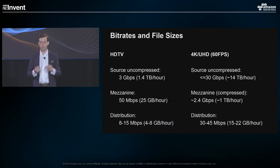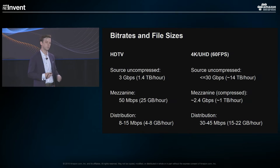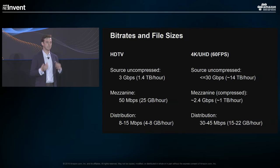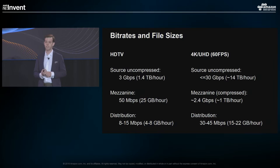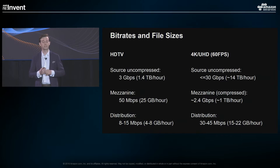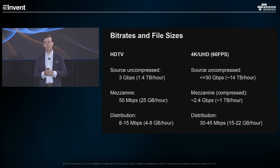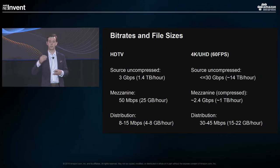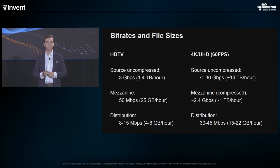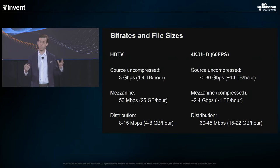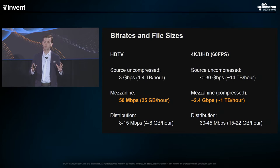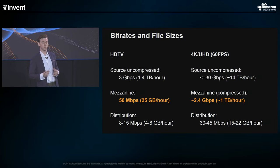To look at this from a like-for-like comparison, the source is what you edit with in a studio — the highest quality content you'll ever have to deal with. For HD 1080p, this is about 3 gigabits per second — big, but not terrifying. You downsample that into a mezzanine format, which is the highest quality we deal with on a day-to-day basis, forming the master for encoding for OTT and pay TV platforms. The mezzanine from HD sits at 50 megabits per second. But a compressed mezzanine for 4K content sits at 2.5 gigabits per second — a much bigger problem to deal with.